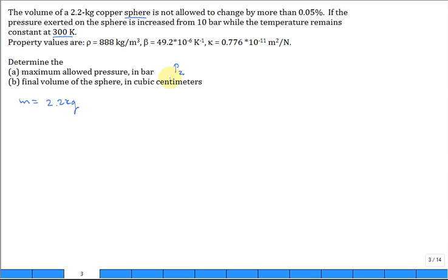So we want to find the final pressure P2, the maximum allowable, knowing that as we increase the pressure the volume's going to decrease. There will be some isothermal compressibility for this, even for a solid sphere.